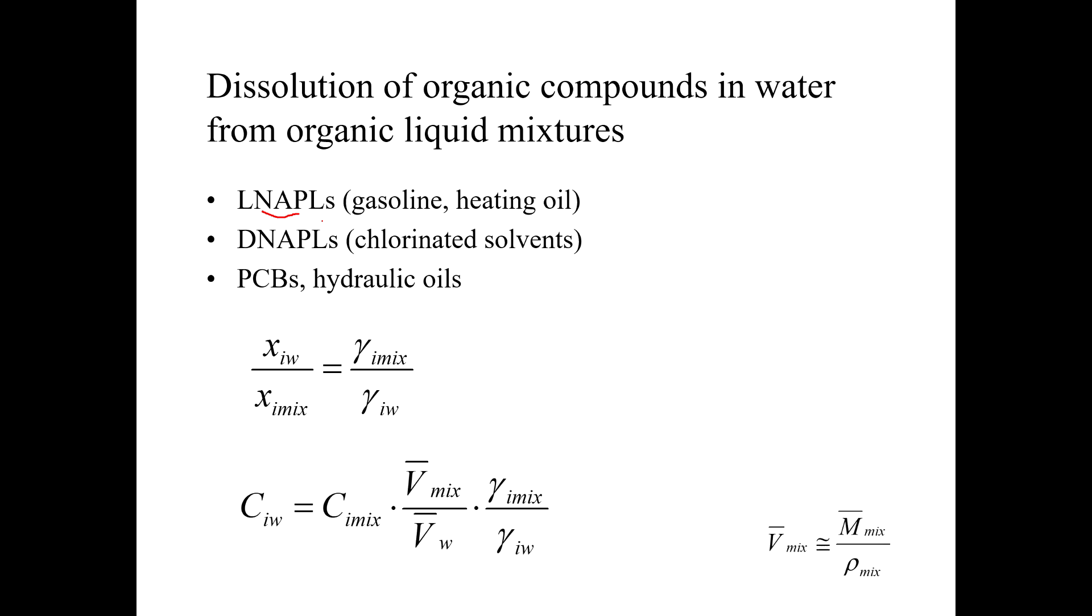So think about the BP Horizon oil spill. All that oil spilling out of the oil well at the bottom of the Gulf of Mexico, some of it rose to the top because it was light. So it was an LNAPL, it rose to the top.